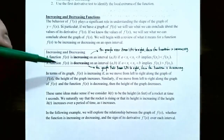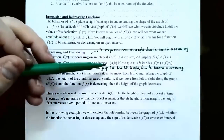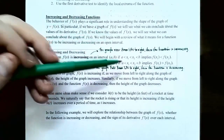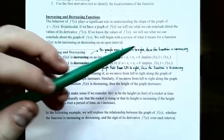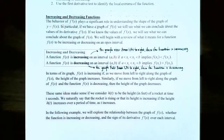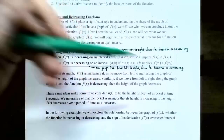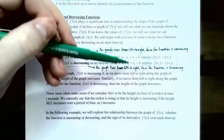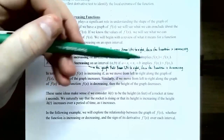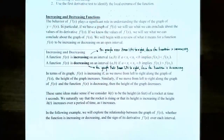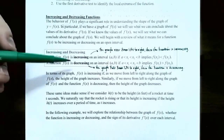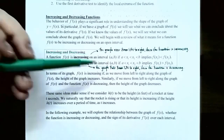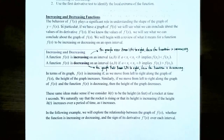On the other hand, a function f is decreasing on an interval (a, b) if a < x₁ < x₂ < b implies that f(x₁) > f(x₂). If the y-value at x₁, which is on the left side of x₂, is greater than f(x₂), then the graph is falling from left to right — so f(x) is decreasing if the graph falls from left to right.